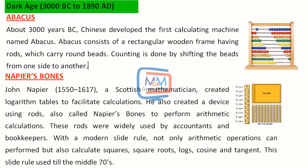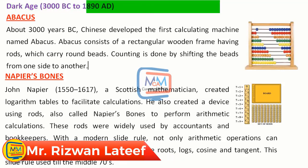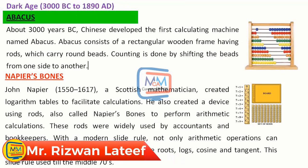Dark age is called so because at that time there was not much advancement — technology was not there and work was done manually. As I told you, pebbles, sticks, etc. or counting on fingers were used. So the first computer considered is the abacus, about 3000 years ago.